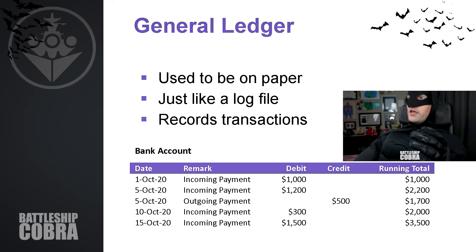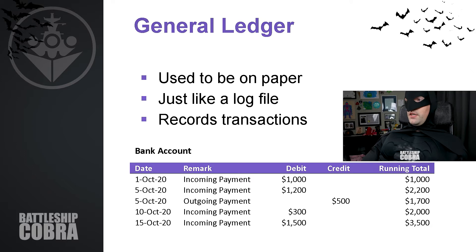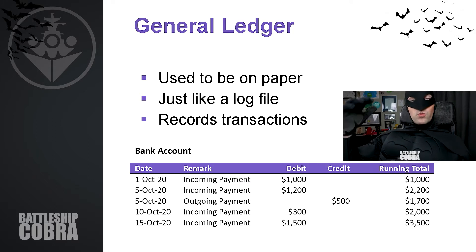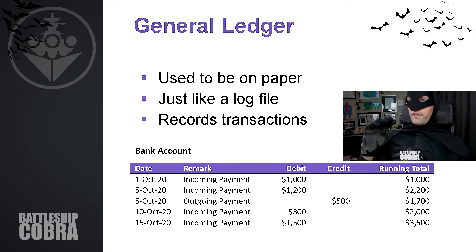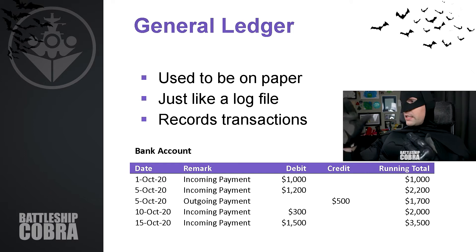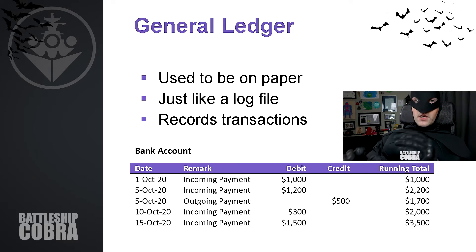The general ledger, or a ledger, used to be on paper — just a piece of paper with debits and credits. When you do a transaction, you write the difference between those two things. It has a running total that says what the balance of that particular account is — it just records transactions. For example, a bank account ledger: October 1st, incoming payment, $1,000 debit increases it; October 5th, another incoming payment; then a $500 payment out; October 10th and 15th, more incoming payments. You can see this running total ledger keeping track of the balance. In SAP, under chart of accounts, going to assets > accounts receivable CAD and clicking the golden arrow opens the ledger, which shows a running total of all transactions for that particular accounts receivable account.